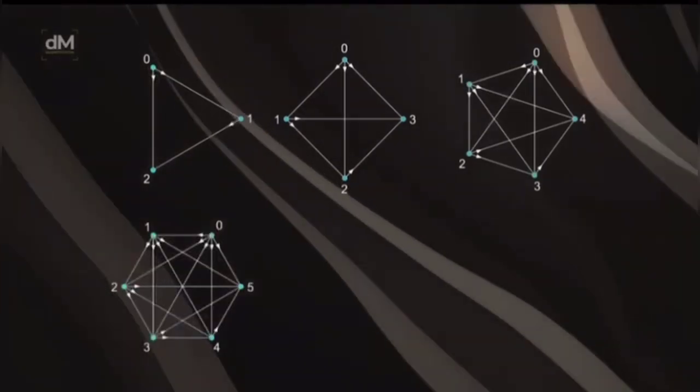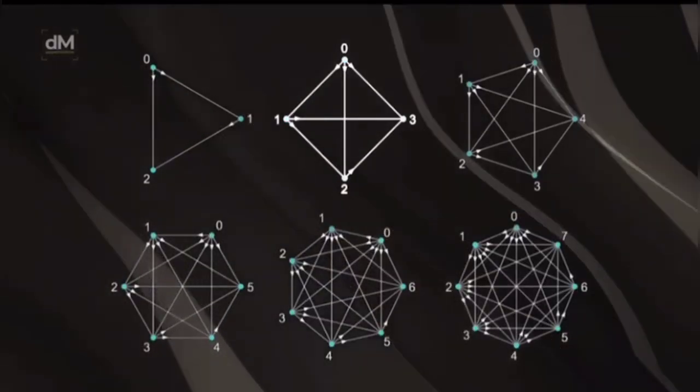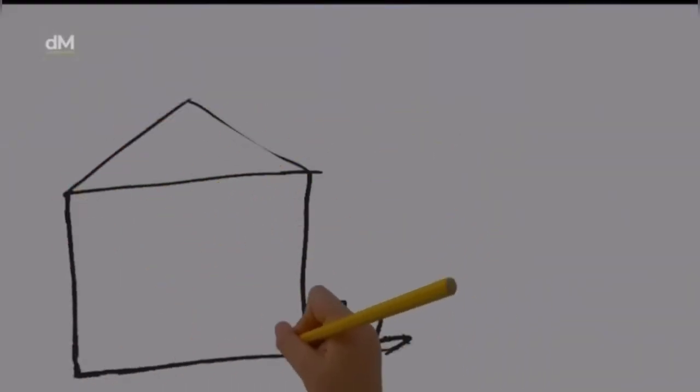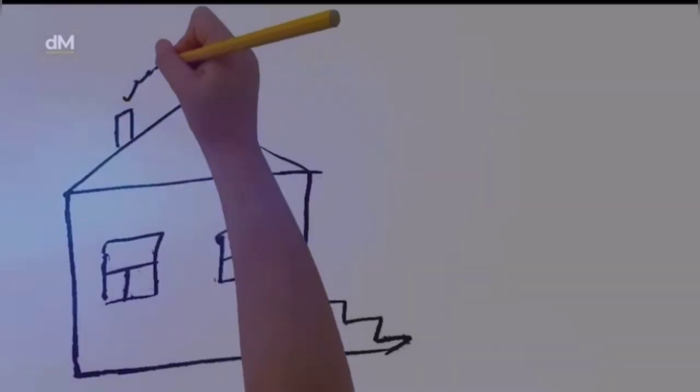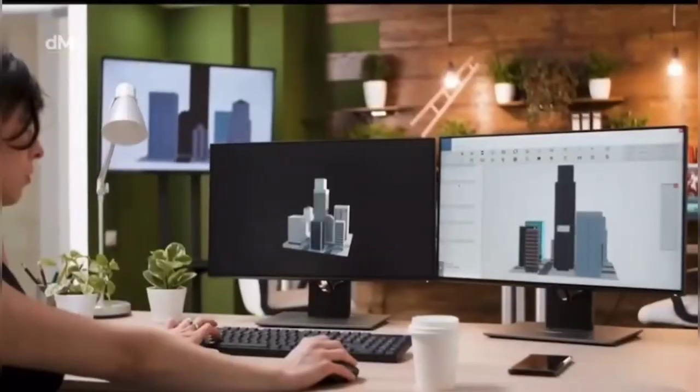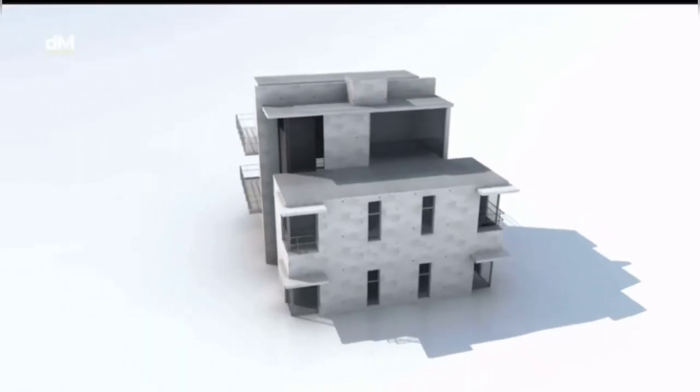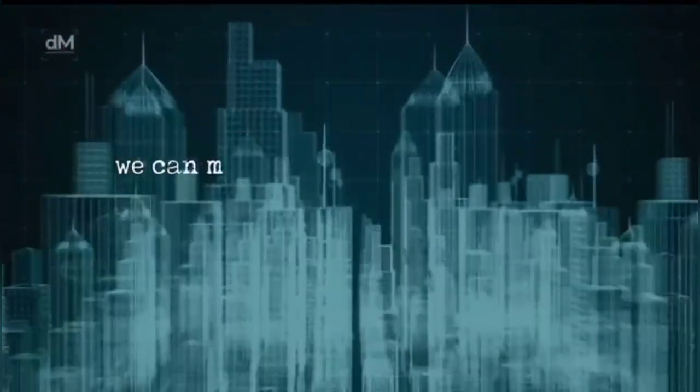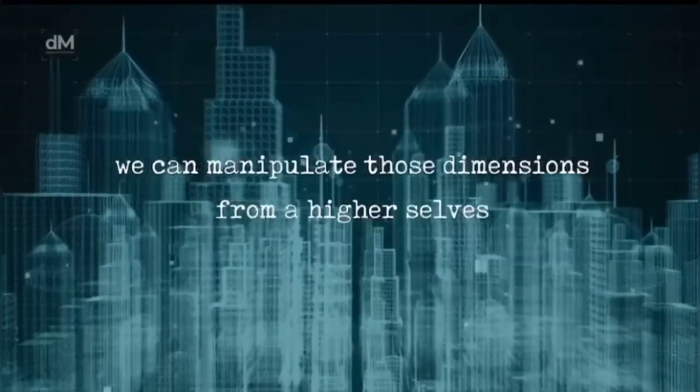If you go into all the higher dimensions—we're in the third—if you draw a line on a piece of paper, that's the first dimension. If you connect those lines and create a house on a piece of paper, that's a two-dimensional structure. Anything you see in a computer that looks 3D is actually 2D. Because we're in the third, we can see down into 2D, all the way down into 1D, and we can manipulate those dimensions from our higher selves.